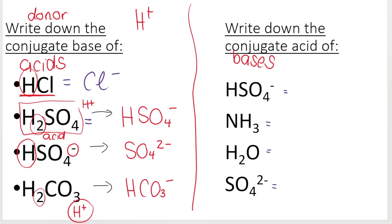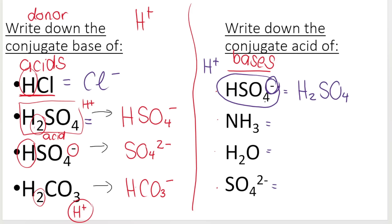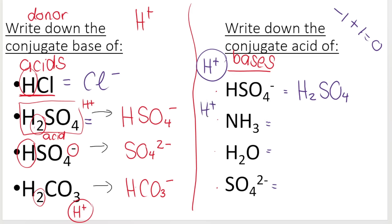In the next set of questions I'm asking for the conjugate acid, which means I'm giving you the base — these are all bases. Bases are proton acceptors. So if HSO4 minus accepts a proton, an H plus, it's going to become H2SO4. The minus disappears because it had a charge of minus one, and now accepting a plus one gives a charge of zero. For NH3: if it accepts an H plus, it's going to be NH4 plus — not NH3 anymore, it has an extra hydrogen. It was neutral with no charge, it accepts a plus, so it becomes NH4 plus.